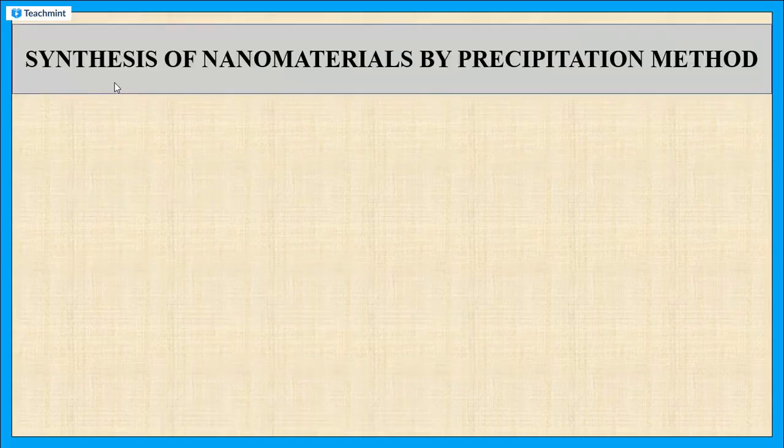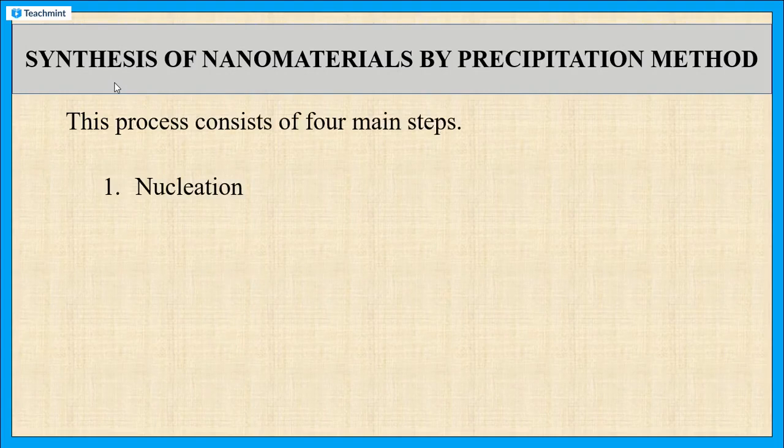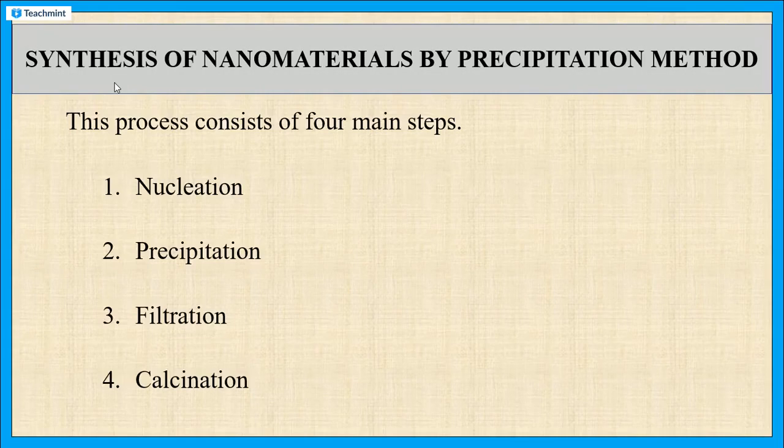Now, let us see the procedure for the synthesis of nanomaterials by using precipitation method. This method mainly consists of four steps. First one is the nucleation process. Second one is the precipitation. Third one is the filtration. And the last one is the calcination. Let us see all these four steps in detail.